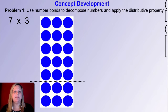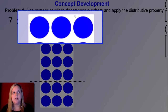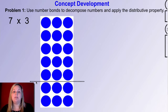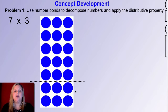We have an array here that models 7 times 3. How many threes are there in 7 times 3? There are seven. Notice here this dotted line — it shows a way to break apart the array. So the seven threes are broken into five threes on the top and two threes on the bottom. Notice how five plus two gives you seven — that's where that's coming from.